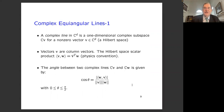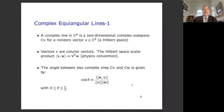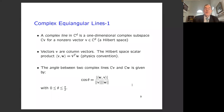Now I come to the complex line case. A complex line is a one-dimensional complex subspace — multiplying by a scalar C for a non-zero vector. Using the physics convention for the Hilbert space scalar product, where you take the complex conjugate on the left, we define the angle between two complex lines Cv and Cw as cos θ = |⟨w,v⟩| / (‖v‖ ‖w‖). We can always normalize so vectors are of length one, and then we assign an angle to each pair of lines.